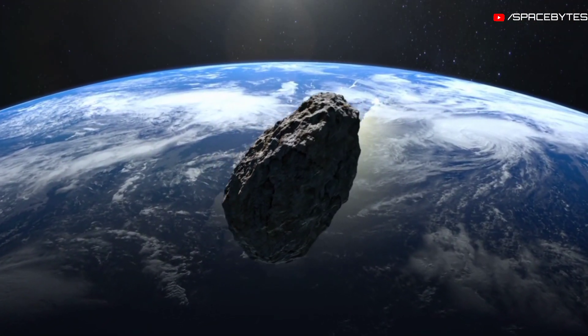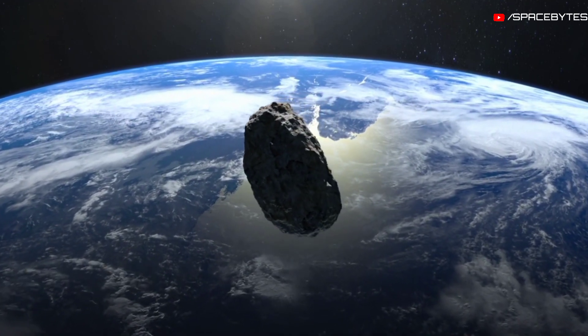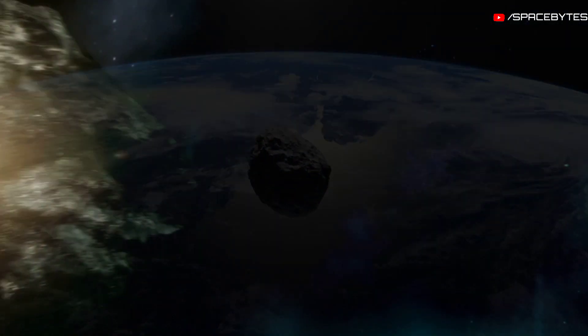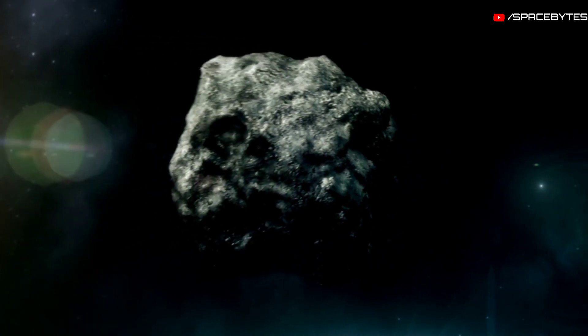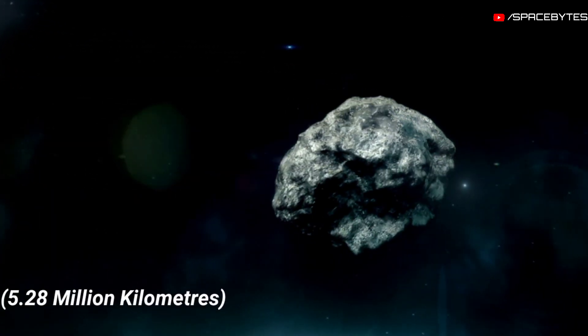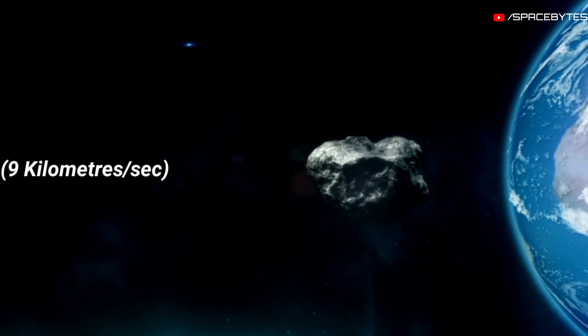This year, asteroid 2019 AV-13 will pass past Earth on August 21st at a distance of 5.28 million kilometers at a speed of 9 kilometers per second.